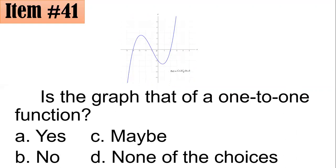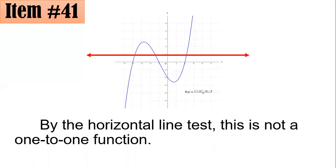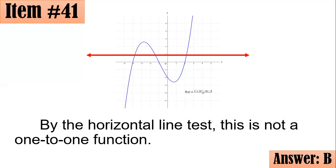By the vertical line test, you can see this is in fact a function because the vertical line, wherever you draw it, will pass through at most one point. However, to determine if it's one-to-one, we employ the horizontal line test. If a horizontal line intersects the graph in at most one point, it is one-to-one. Drawing a horizontal line here, it intersected the graph in three points — more than one — so this is not a graph of a one-to-one function. Letter B.